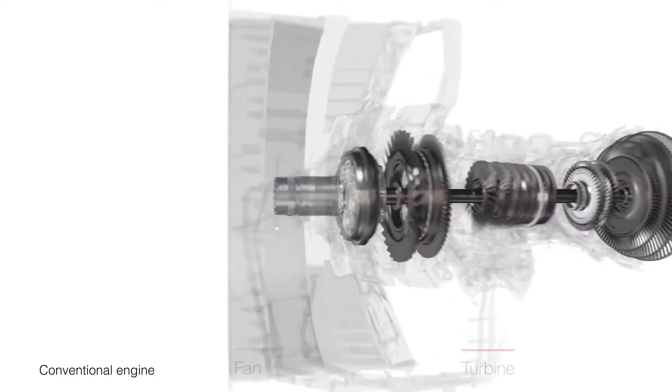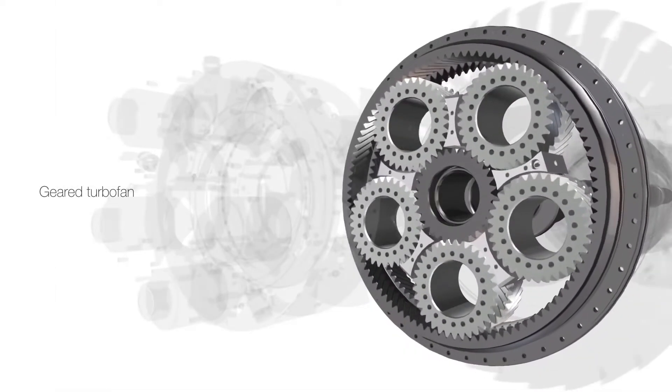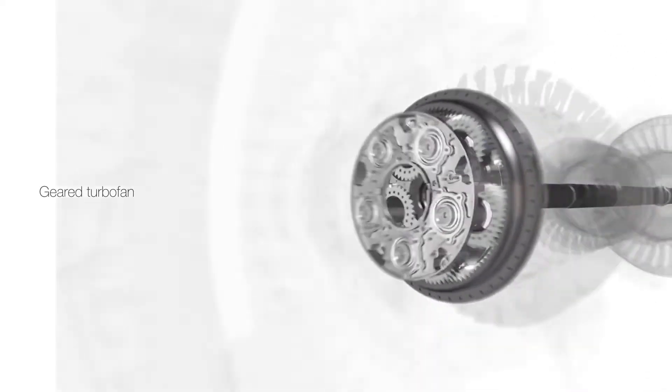In a geared turbofan engine, a gearbox enables the fan and turbine to run at different speeds.